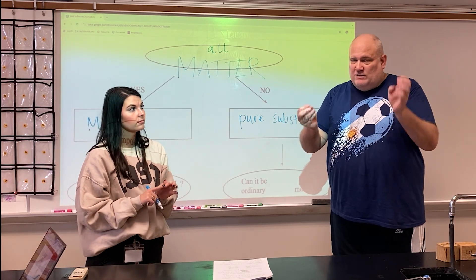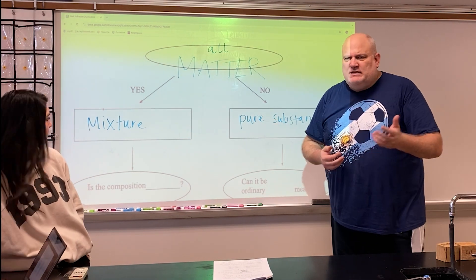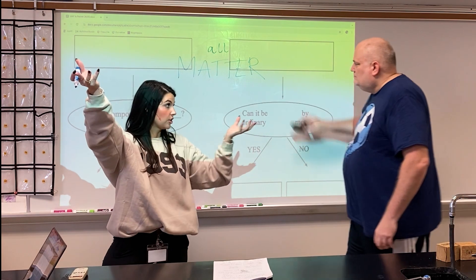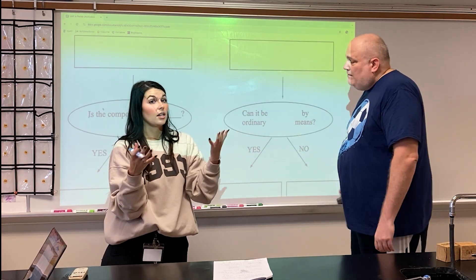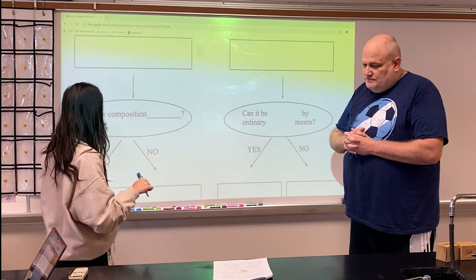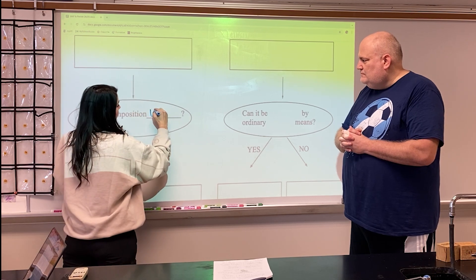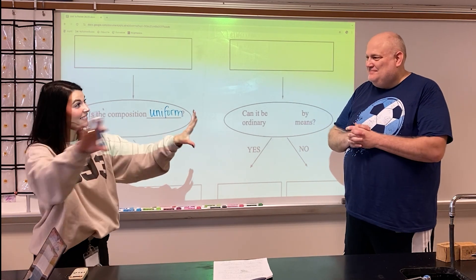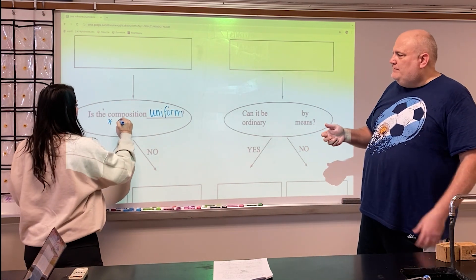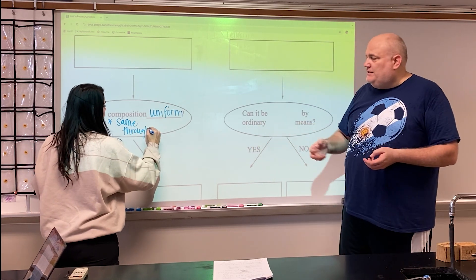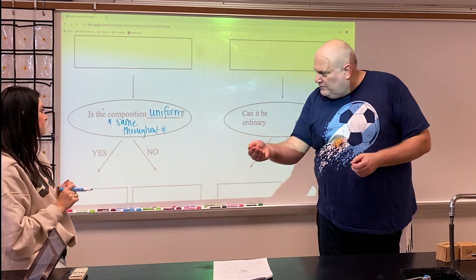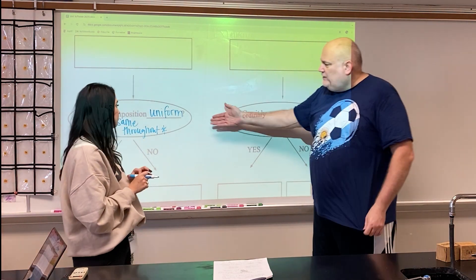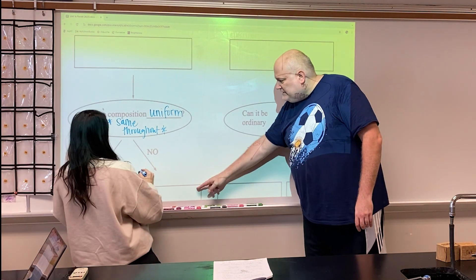Salt water versus Lucky Charms are different types of mixtures. The question we ask to differentiate them is: is the composition — what it's made of — uniform? Think of uniforms here at school, which are supposed to make everybody look the same. Take alphabet soup: you can separate the letters from the broth, but one spoonful won't spell the same words as another or have the same amount of letters. It's not uniform throughout, so we say it is heterogeneous.